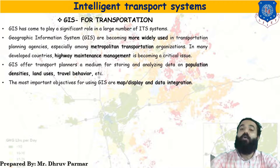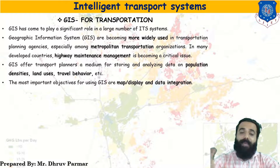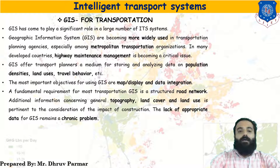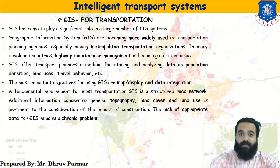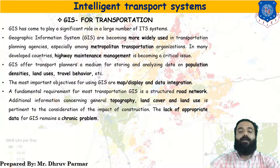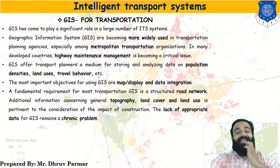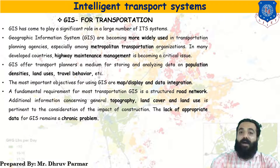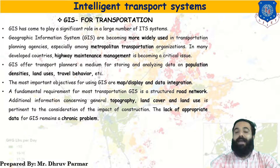The most important objectives of GIS are map display and data integration. The fundamental requirement of most transportation GIS applications is a structured road network. Topography, land cover work, and land use are also very important considerations for assessing the impact of construction. By using GIS, we can calculate which areas are affected or impacted by construction or by providing road facilities.